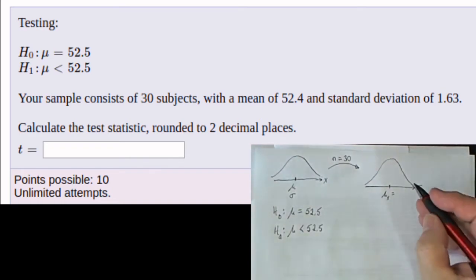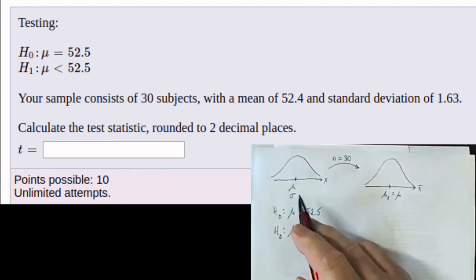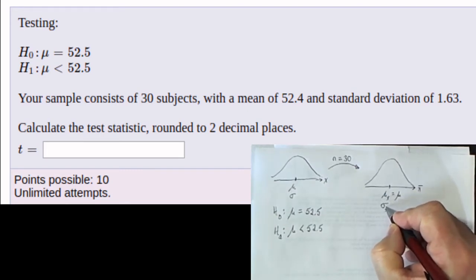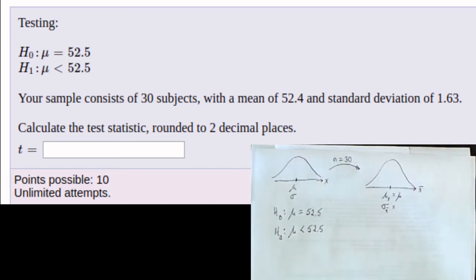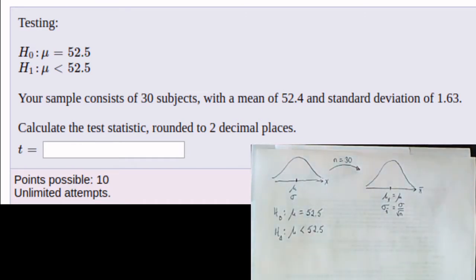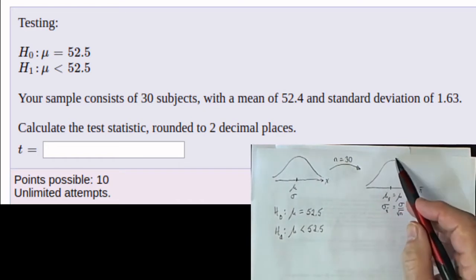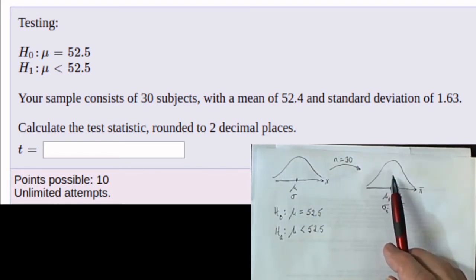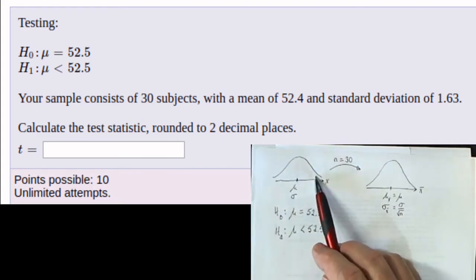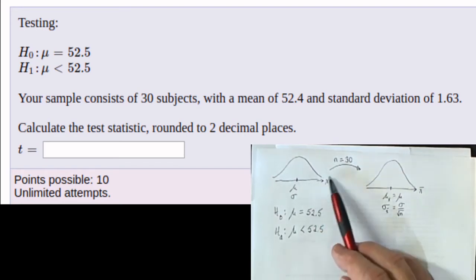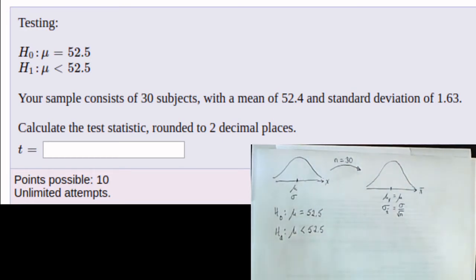The central limit theorem assures us that the mean of the distribution of sample means is going to be the same as the mean of the original population. Not only that, the standard deviation of the distribution of sample means will be the standard deviation of the original distribution divided by the square root of n. This distribution will be normally distributed if the original population was normal, or if the sample size is 30 or more.